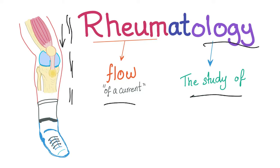Don't say science — 'ology' is not the same as science. For instance, you know astronomy; it's a science and it doesn't end with an 'ology.' However, astrology ends in an 'ology,' but it's not science.